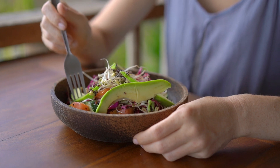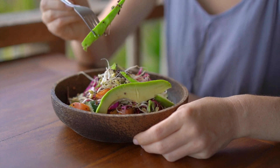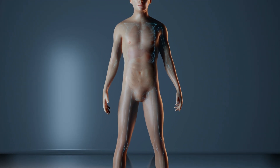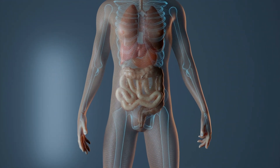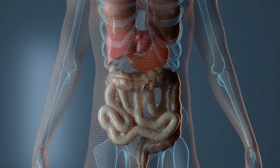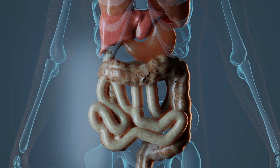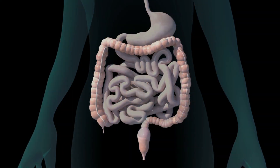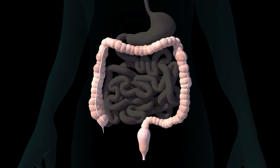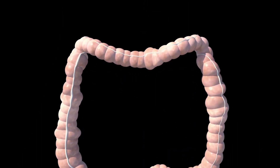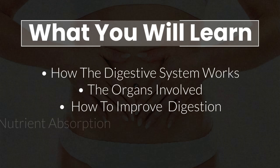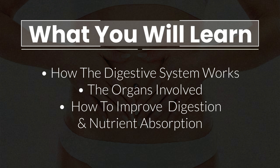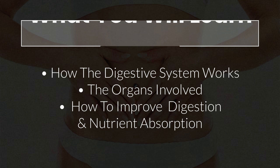The food you eat takes a very long journey through almost your entire body. Along the way, the useful parts of food are absorbed — its energy and nutrients — while useless or harmful parts are eliminated. In this video, I want to explain the basics of nutrient digestion and absorption.